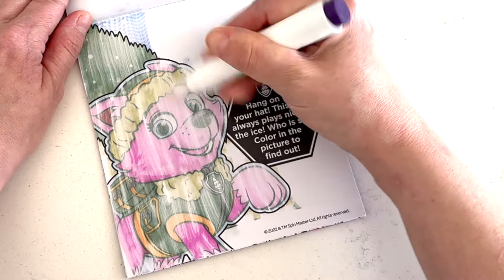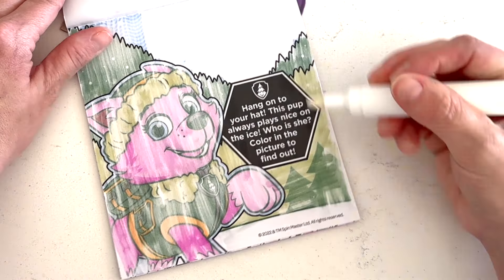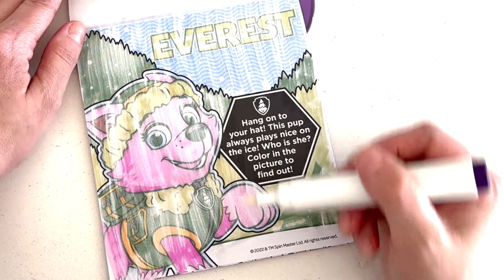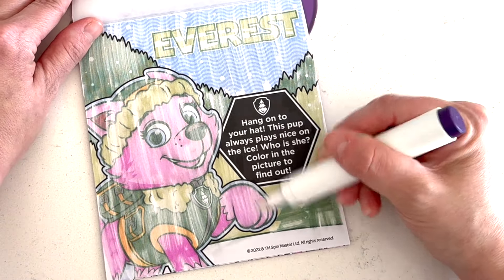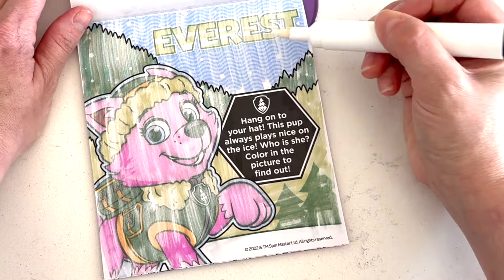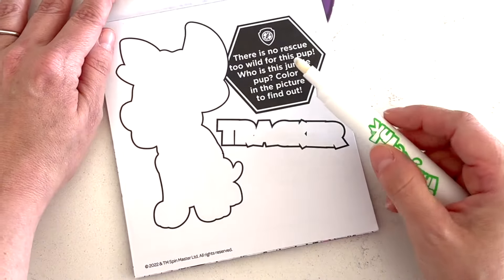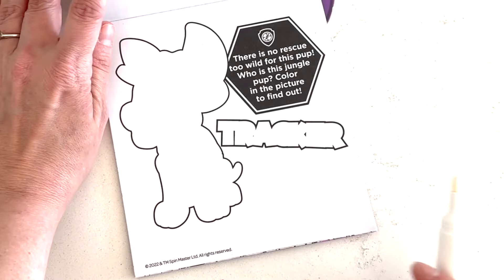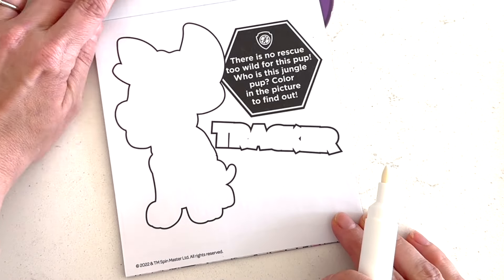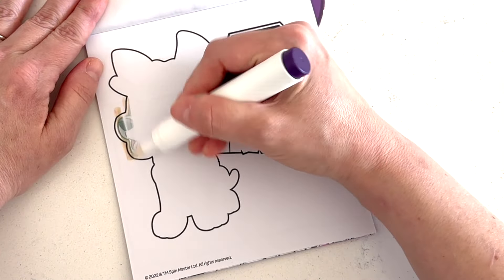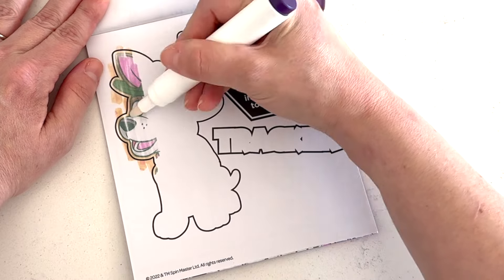Hang on to your hat. This pup always plays nice on the ice. Who is she? Color in the picture to find out. Did you guess Everest? Because it's Everest. How cute is she? E-V-E-R-E-S-T.